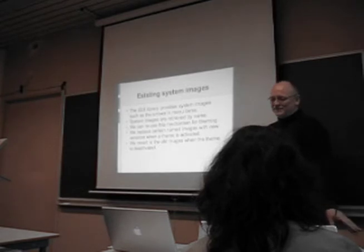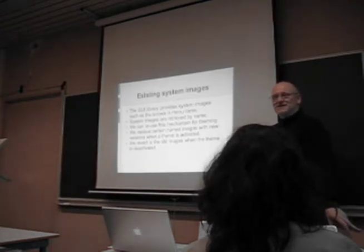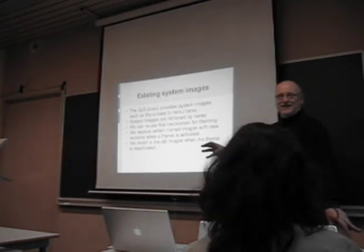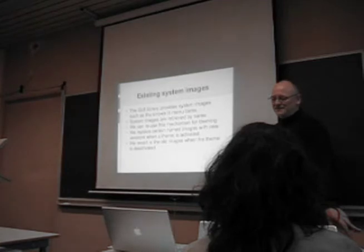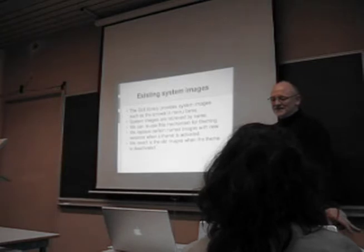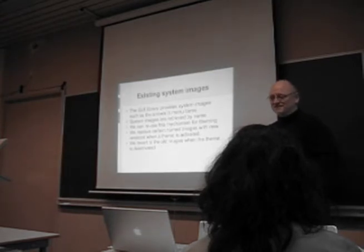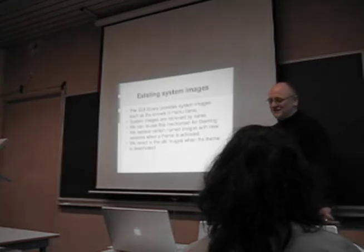Okay, the existing theming stuff. GNUstep has pretty much always provided system images. That's things like the arrows in menu items, icons for file buttons for when you want to load from a file system, that kind of thing. So we can reuse that mechanism. What we do is we replace the named system images that are built into the system with versions from a particular theme. And when the theme is deactivated, we just revert to the originals.